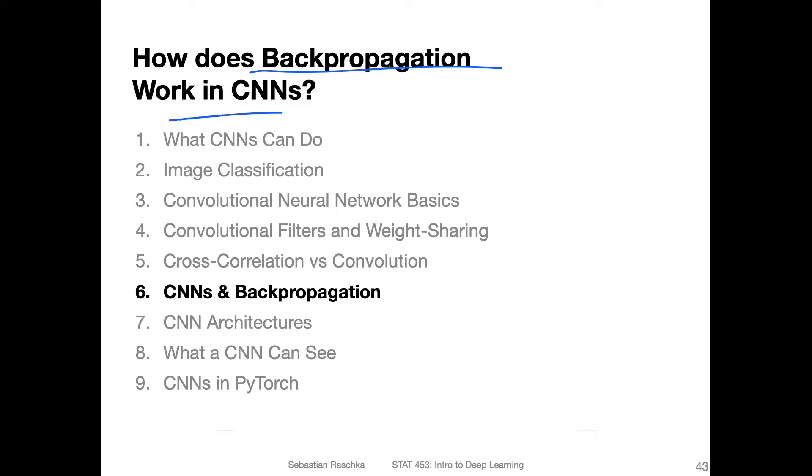I just want to give you the big picture overview here, because I already tortured you enough with computing the gradient of the loss function with respect to the weights when we talked about single layer neural networks and multi-layer perceptrons. No one really likes to derive these things by hand.